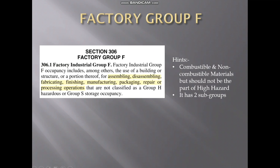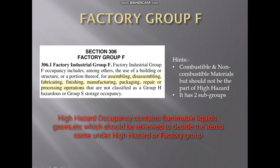Factory Group F includes assembling, disassembling, fabrication, finishing, manufacturing, packaging, repair, or processing operations. There will be combustible and non-combustible material, but it should not be part of high hazard. In the coming slides, we are going to see what high hazard is, as it has different kinds of things and should not be mixed with the factory industrial group.